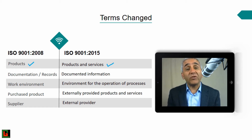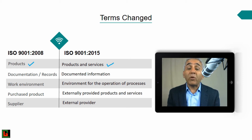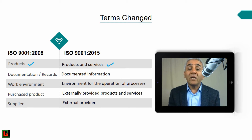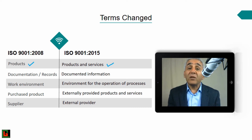A third change: 'work environment' in 2008 is now called 'environment for the operation of processes' — a small but notable change of term. 'Purchased product' from 2008 is now called 'externally provided products and services,' again reflecting the same shift from 'product' to 'products and services.' Finally, 'supplier' in 2008 is now called 'external provider.' These are the key terminology changes in 2015.